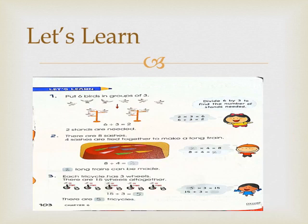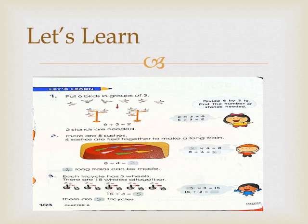Let's learn from your book, page number 103. Question number 1: Put 6 birds in groups of 3. There are 6 birds, and in one group only 3 birds will be there. How many groups can we make? First, does 6 come in the 3 times table? Yes — 2 3s are 6. Taking help from the division table: 6 divided by 3 equals 2. So 2 stands are needed.